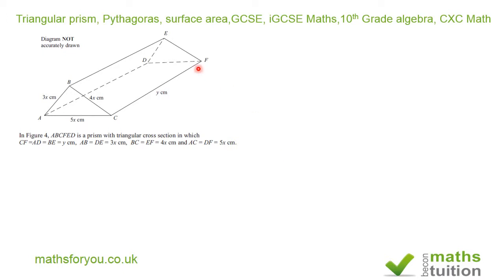The question itself is based on this diagram here. And it says figure 4, ABCDEF is a prism with triangular cross-section in which CE equals AD equals PE equals Y centimeters, and AB equals DE equals 3 centimeters. BC equals EF equals 3X centimeters, and AC equals EF equals 5X centimeters.